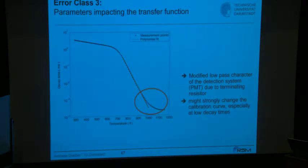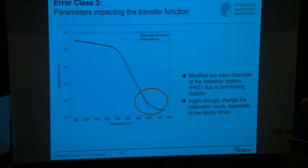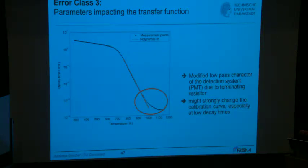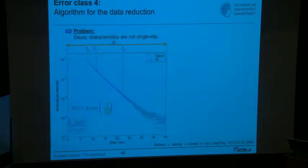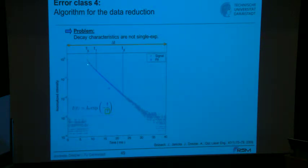Returning to the photomultiplier tube: if you choose 500-ohm rather than 50-ohm termination for higher signals, you end up with a limited minimum resolvable decay time — the signal levels out. This termination must not be changed between calibration and measurement. Regarding the algorithm, the decay is not mono-exponential everywhere: at the beginning it is certainly multi-exponential, and at later times the signal flattens due to the terminating resistor. You want to select a time range where your mono-exponential model function is reasonably justified.